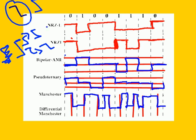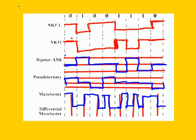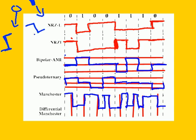Let me explain this easily. Let's say I have zero and one. Zero is from low to high. One has two options: either from high to low, or from low to high — so we have two options for one.